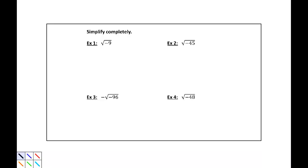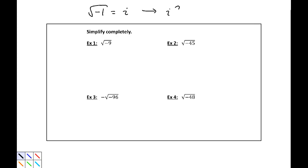When we're going to simplify complex roots, the thing we have to be mindful of is that the square root of negative 1 we often write as equals i. In reality, that really just means that i squared is equal to negative 1, but we often use the square root of negative 1 equals i — it's more useful.